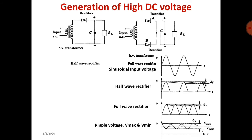Now we see the full wave rectifier. There are two diodes, A and B. C stands for filter. As we know, the output of the rectifier is not pure DC but is pulsating, so we use a filter circuit. In this circuit a capacitor is used for filtering. In a full wave rectifier, during the positive half cycle diode A becomes forward biased and diode B becomes reverse biased.